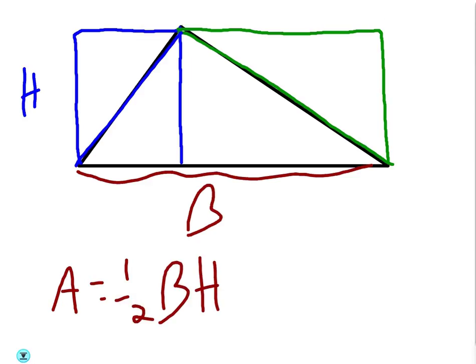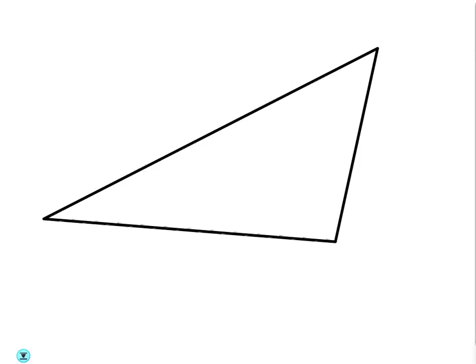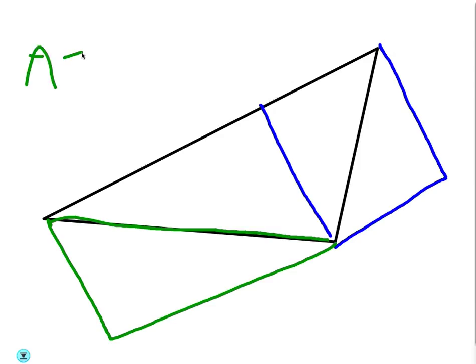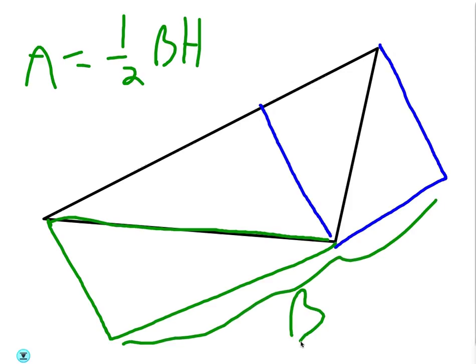Let me do one more — this one's kind of tilted. This triangle would actually have a height; you'd have to draw it kind of like this. That's the height of the triangle, and then we can make a rectangle around it. It's not a perfect drawing, but you can see it will work for any triangle. You'll still get the area of the triangle equals one-half base times height — half of the area of the entire rectangle. This would be your base and this would be your height.